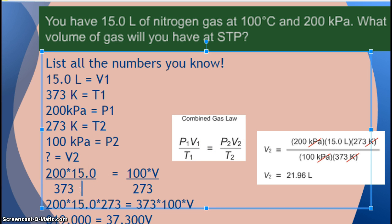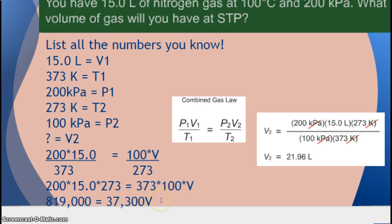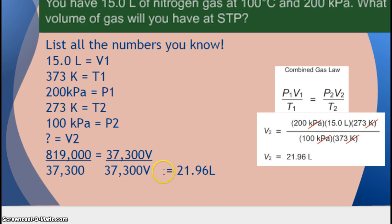I took my first pressure times my first volume, divided it by my first temperature. I took my second pressure times V2, because that's what I'm solving for, divided by my second temperature, and then I cross-multiply. So I took 200 times 15 times 273, put it over here. I cross-multiply, I took 373 times 100 times V, and then I simply put them in my calculator, and then I divided both sides by 37,300 to get V by itself, and V equals 21.96 liters.